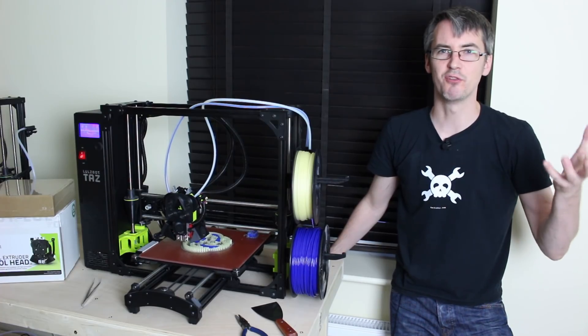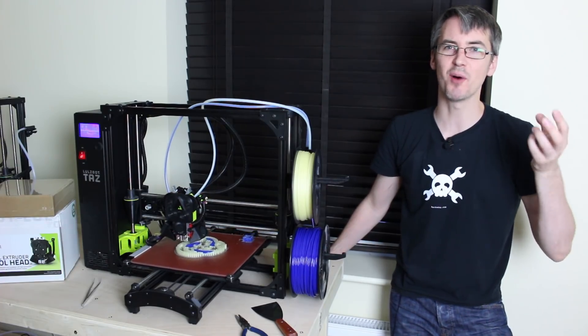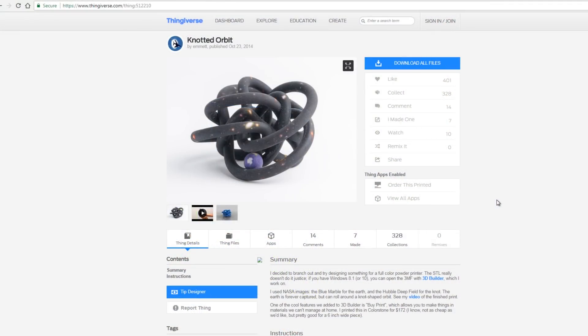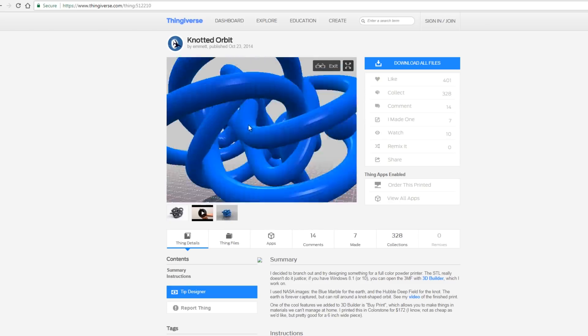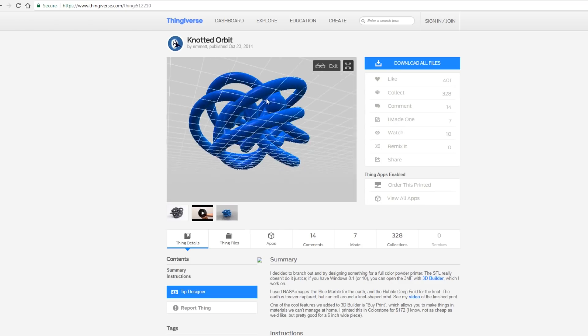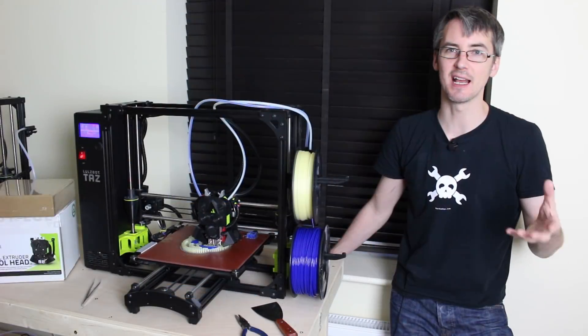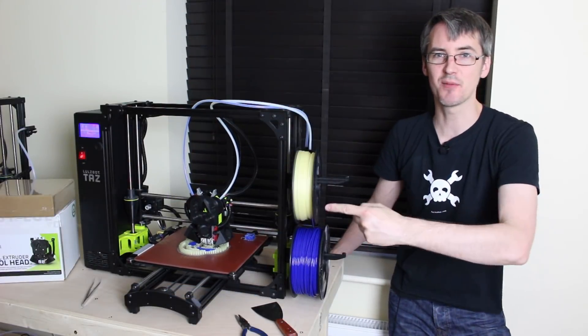One thing I've wanted to print for a while is the Knotted Orbit by Emmet, which you can find on Thingiverse. And this is basically a loop that goes around with a ball stuck in it. And obviously, it's impossible to print normally with FDM printing. So you really do need that water-soluble support or something like an SLS printer. And that's what's actually being printed here.